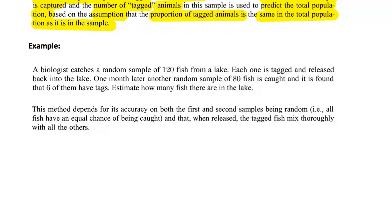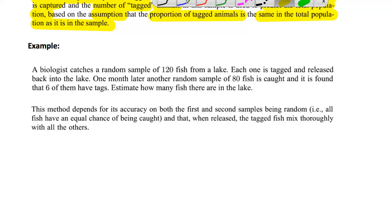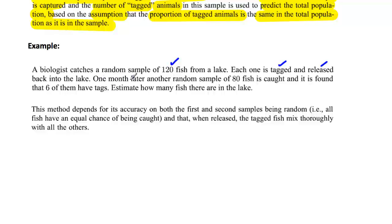Let's see what happens in a situation where this capture-recapture method is used. A biologist catches a random sample of 120 fish from a lake. Each one of them is tagged and then released. One month later, another random sample of 80 fish is caught, and it is found that six of these have tags — so six out of the 80 in the second sample have tags. How will the biologist estimate how many fish there are in the lake?